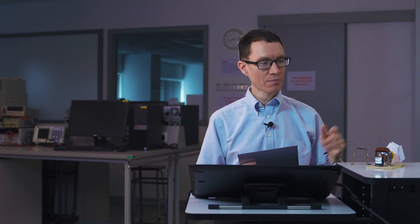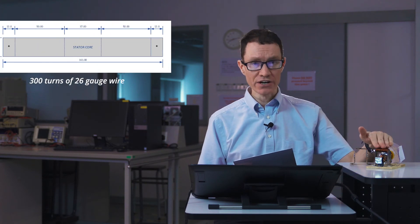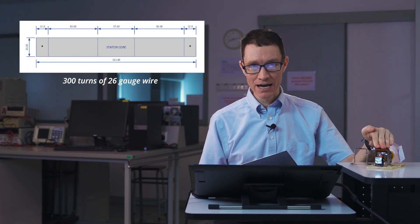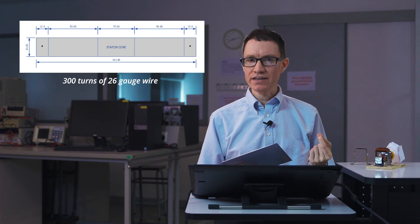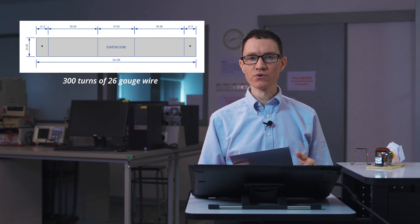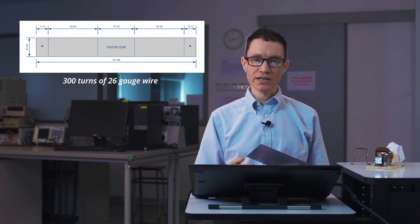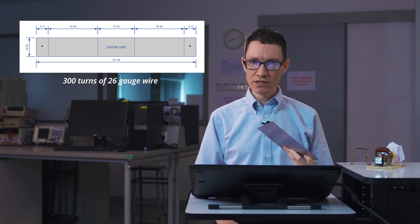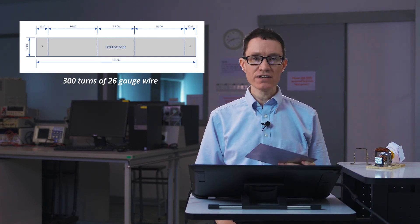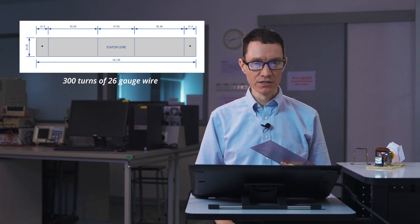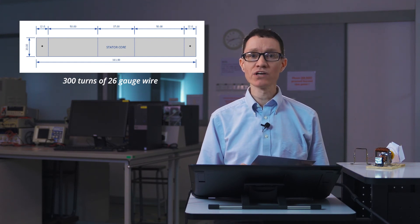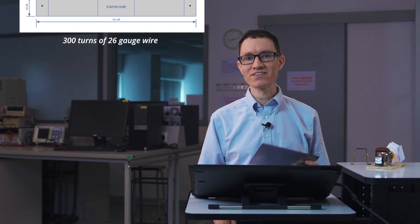Before we go over to the bench, I want to point out that to fabricate the stator I didn't use a coffee can this time. The metal in a coffee can is a little too thin to get the magnetic flux we need. Instead I used one-millimeter-thick sheet steel — Q235 steel, which is a soft steel — and I had the stator fabricated at a machine shop. Let's go over to the bench now and measure our curve.